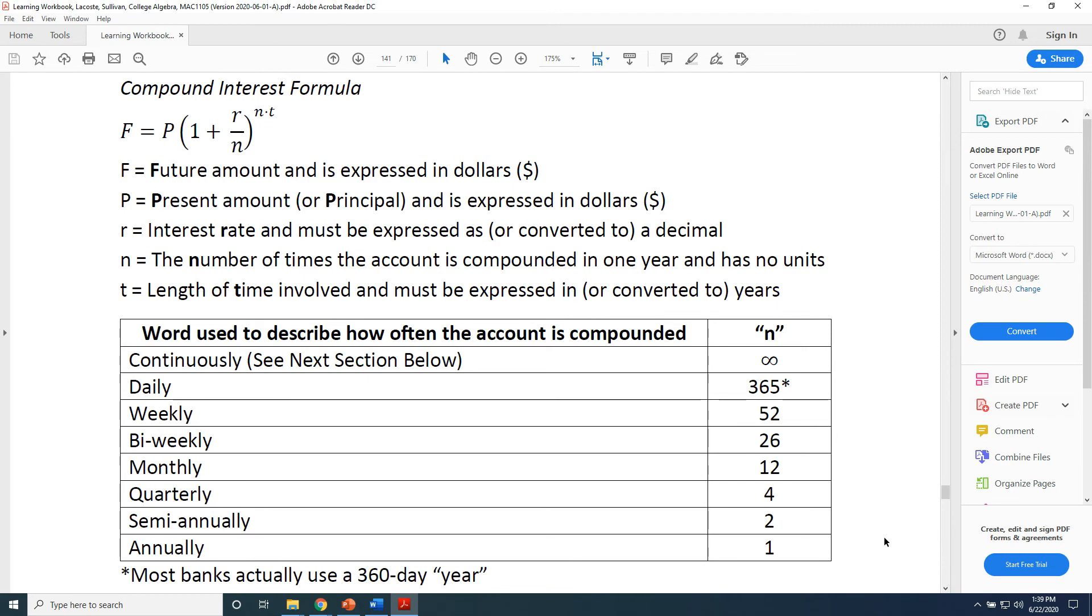And finally, if an account is compounded daily, since there are 365 days in a year, n would be equal to 365.